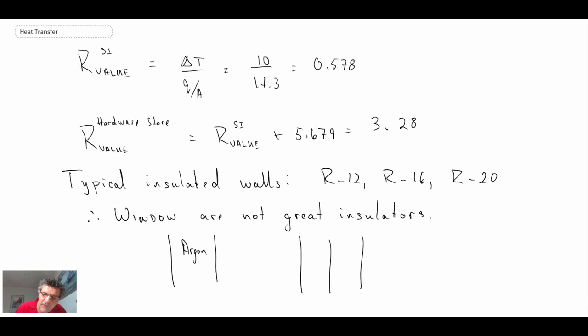And so the triple pane windows, you would have one convective cell here. It would be going like that. And then you'd have another convective cell on the other, but it would be reduced. And so you're significantly reducing the amount of heat transfer that goes through. They're very expensive, very thick, very heavy, but triple pane windows is another way of bumping up the R value for a window.